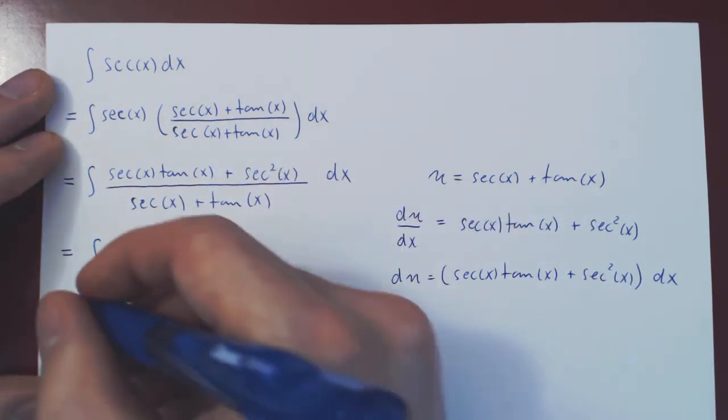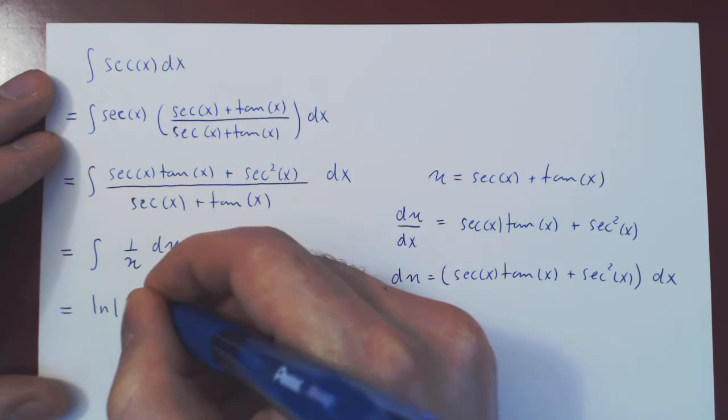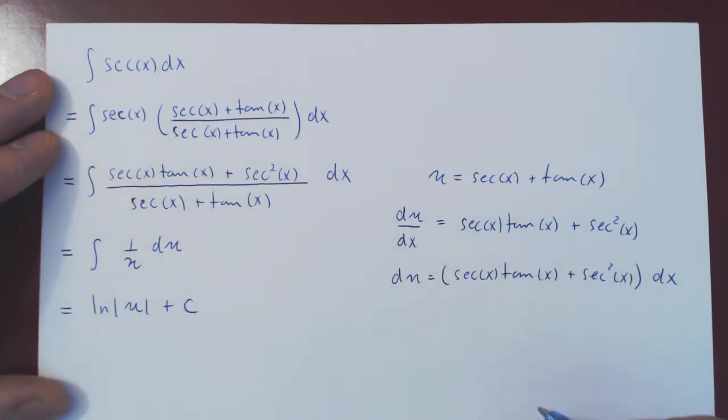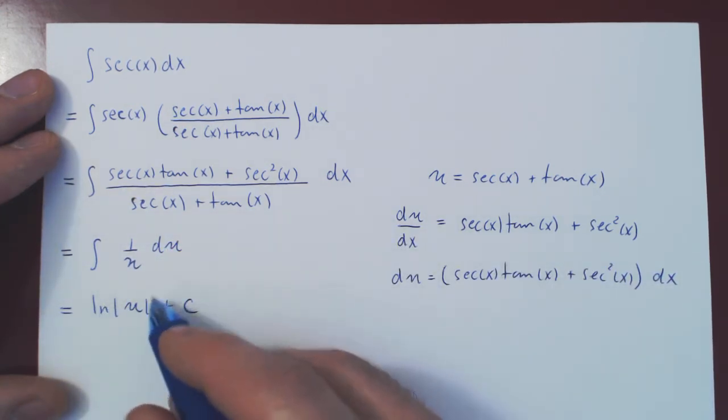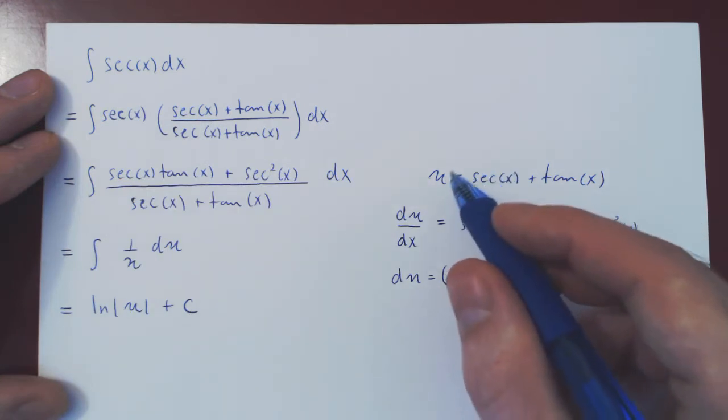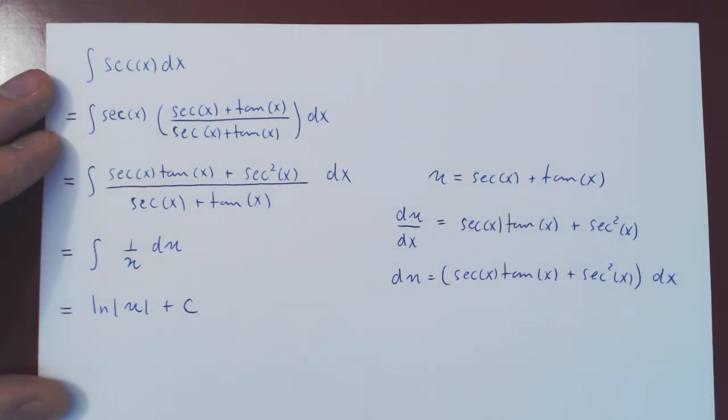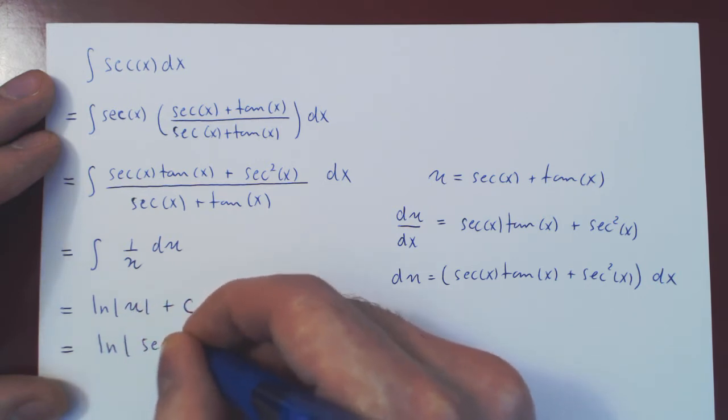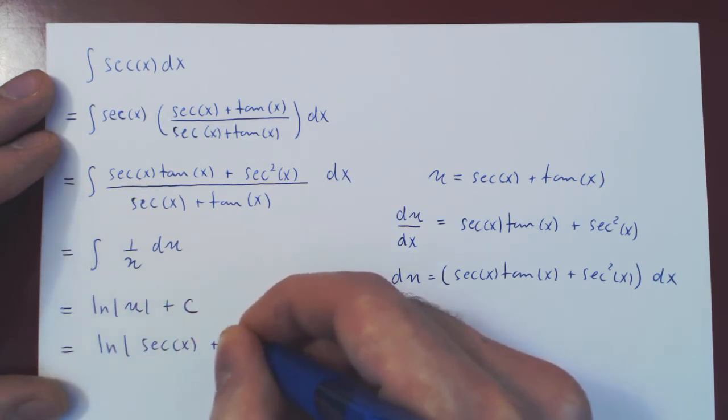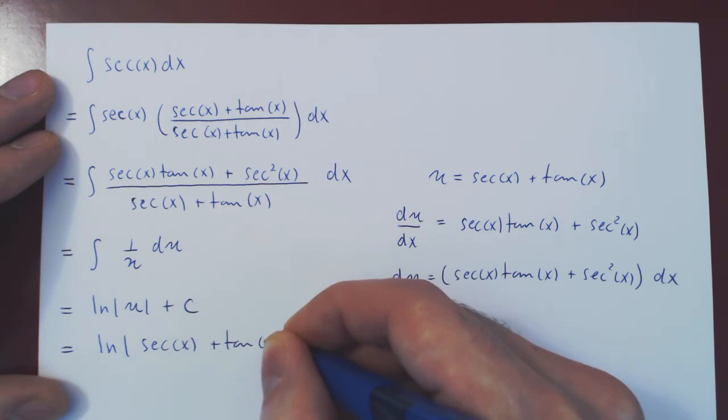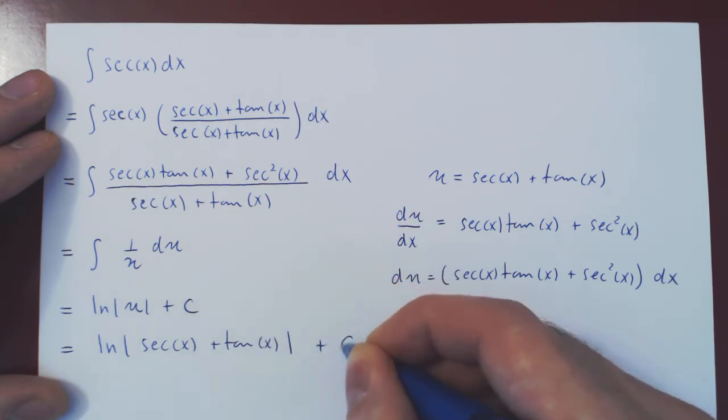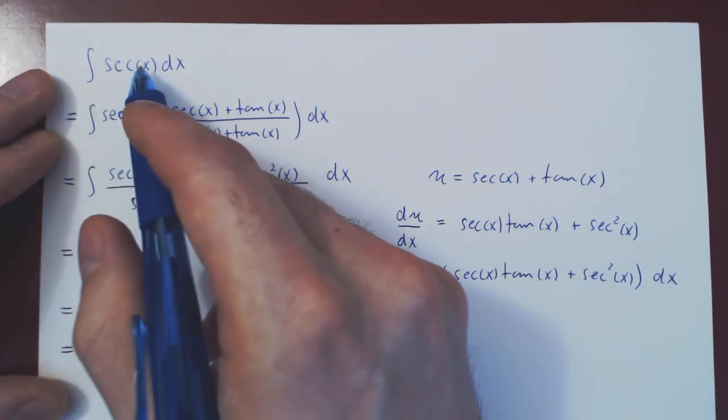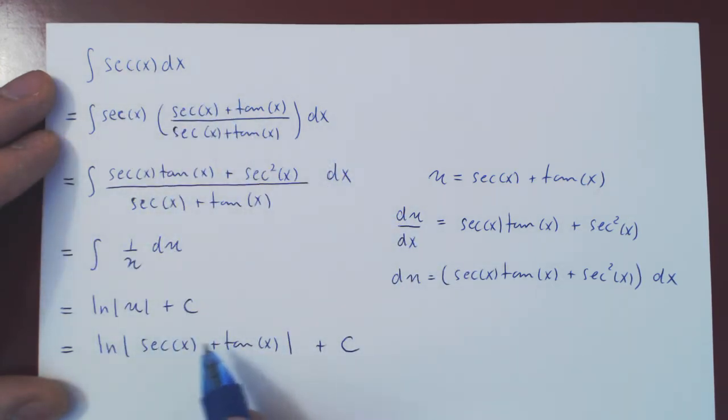The integral of 1 over u du is simply the ln of u in absolute value plus c. And of course, we want to go back to a function of x, and we replace u by secant of x plus tan of x. And the final answer is ln of secant of x plus tan of x plus c. So there you have it, the integral of secant of x is ln of secant of x plus tan of x plus c.